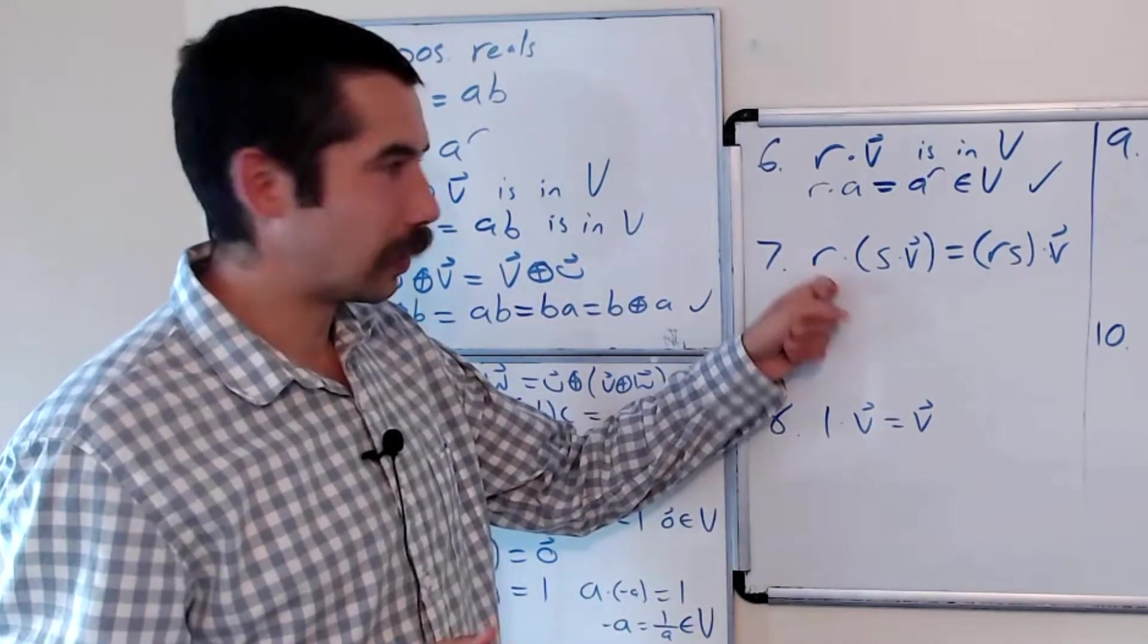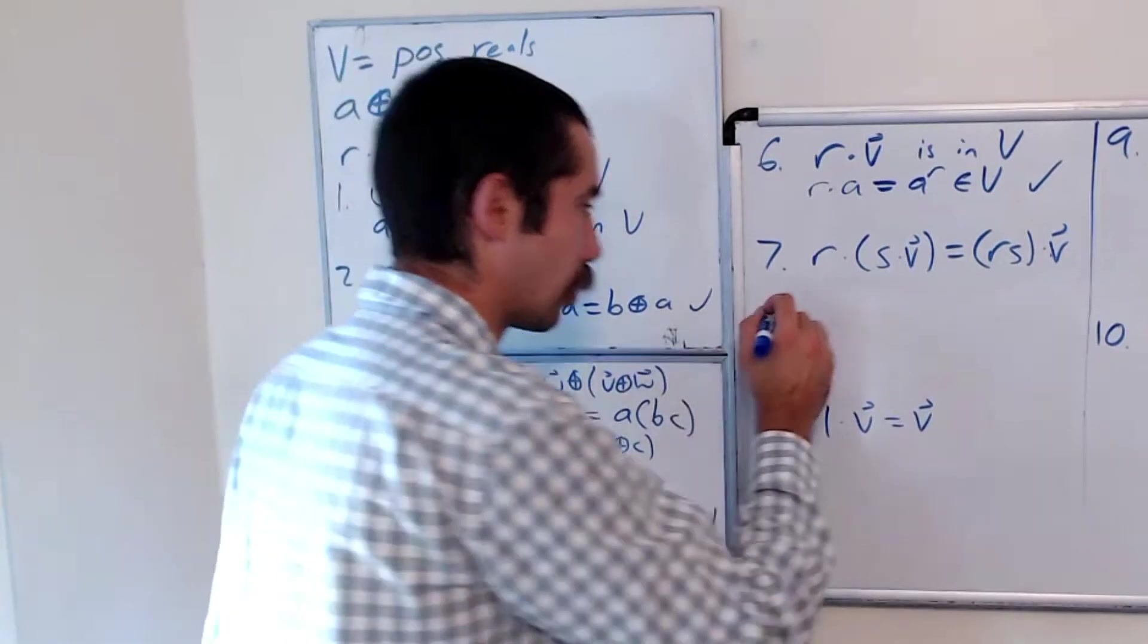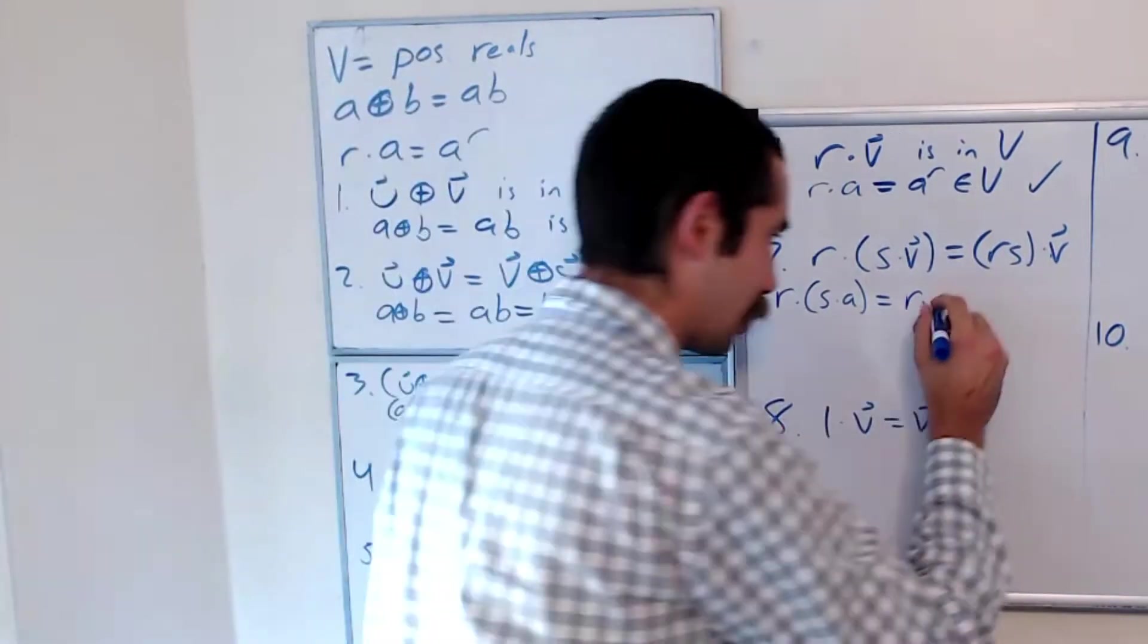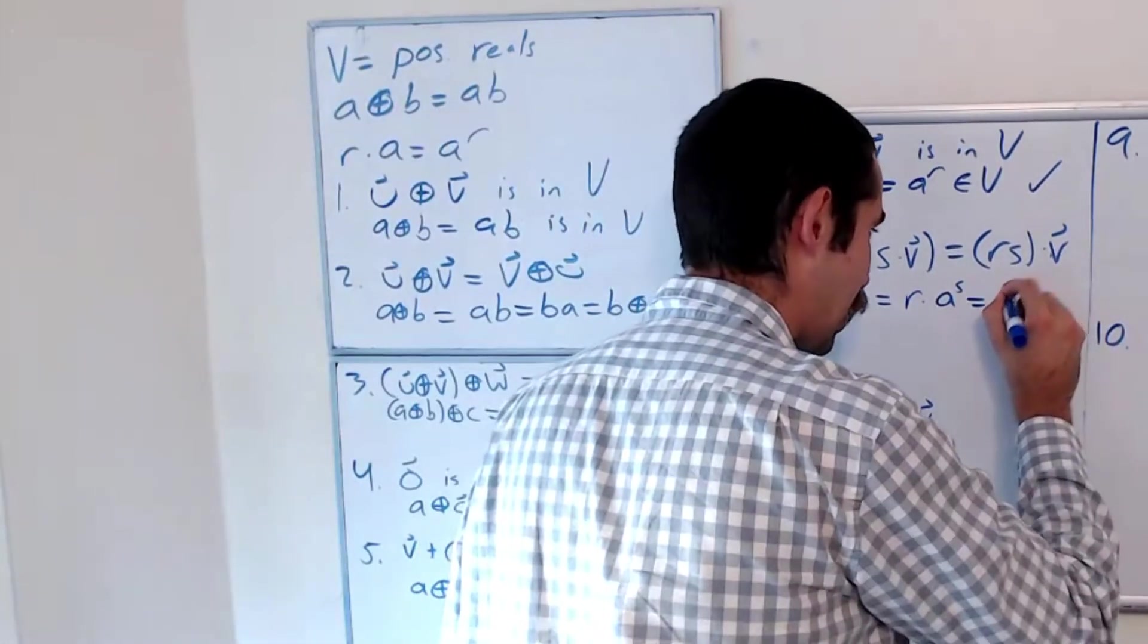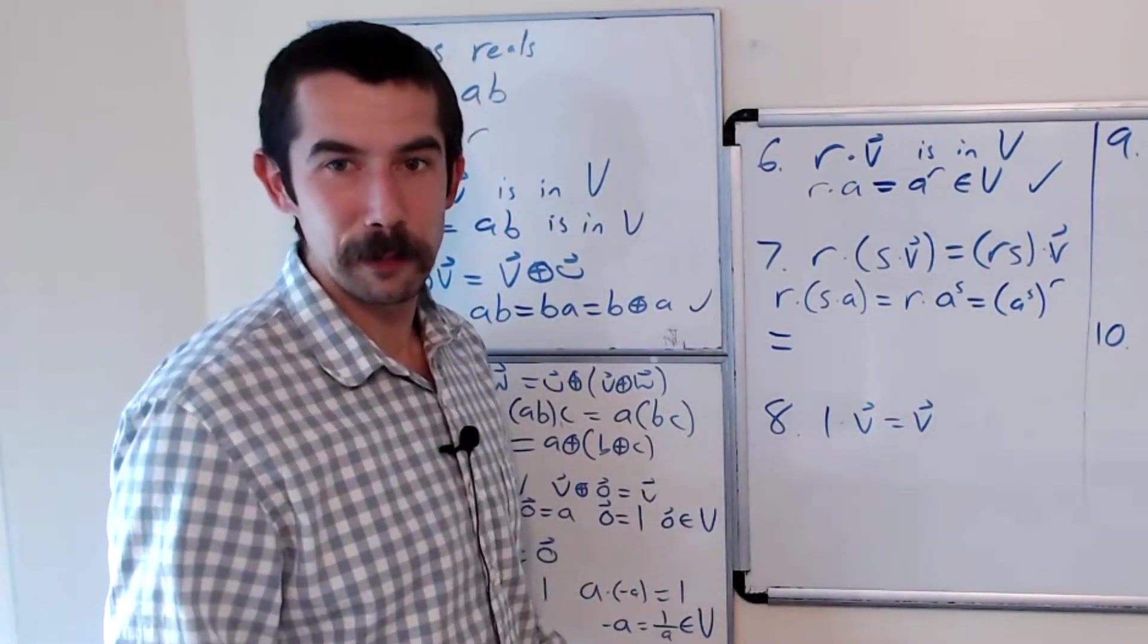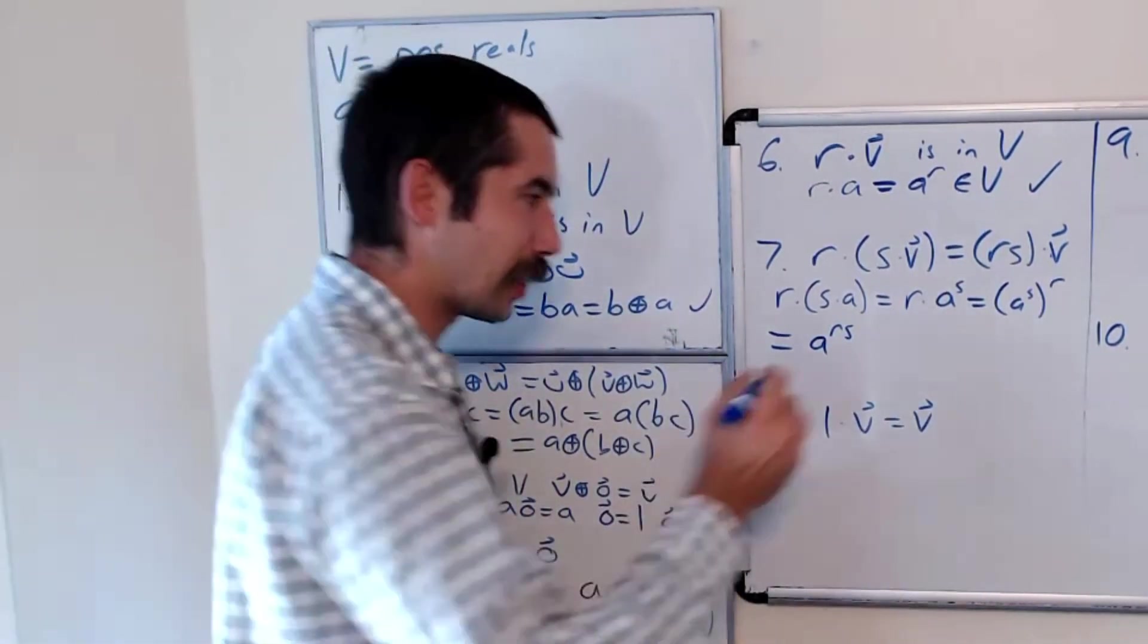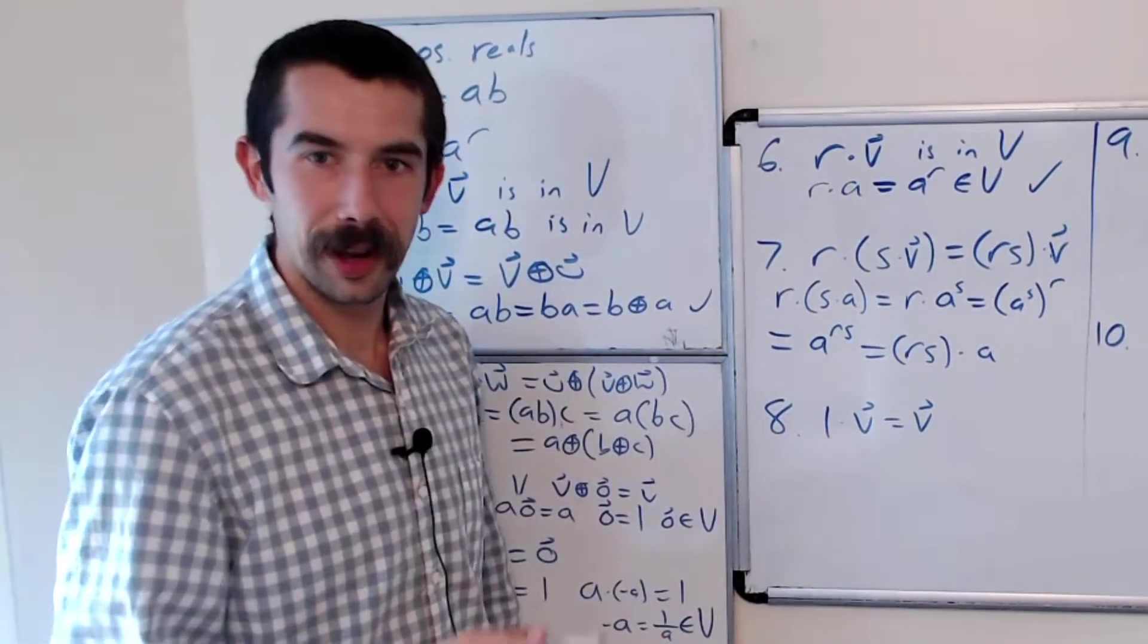Now we want to show that any real number times a real number times a positive real number is equal to RS times V. So let's just work this out. R·(S·A). Well, that's equal to R times—S·A is by definition A^S. R·A^S by definition is (A^S)^R. And properties of exponents say something raised to a power raised to a power, we just multiply the exponents. So that's equal to A^(RS). But we know that this is equal to (RS)·A. So condition seven holds.